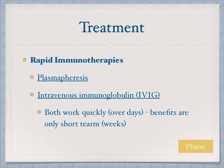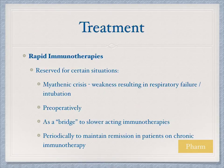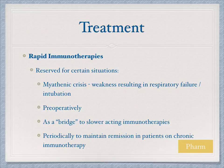Plasmapheresis and IVIG are considered rapid immunotherapies, typically used for patients in a myasthenic crisis or as a bridge when switching from one immunotherapy to another. They both work quickly but are short-term in nature. These rapid immunotherapies are also sometimes given preoperatively and used periodically to maintain remission in patients on existing chronic immunotherapies.